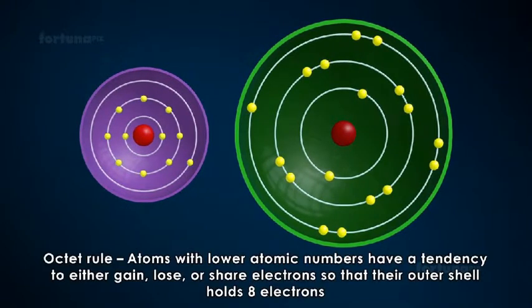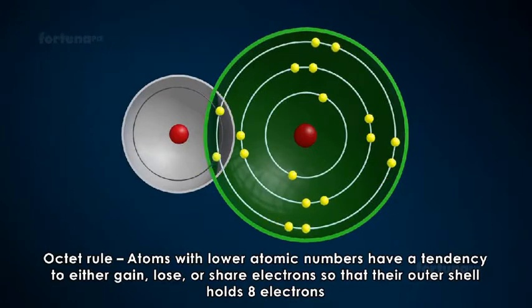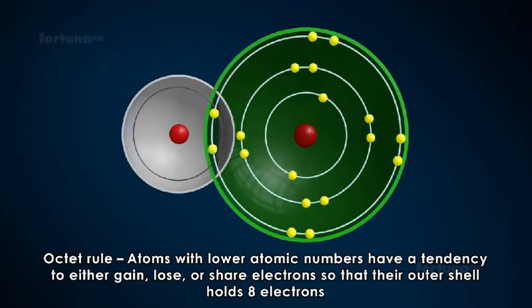The octet rule says that atoms with lower atomic numbers have a tendency to either gain, lose, or share electrons so that their outer shell holds 8 electrons.